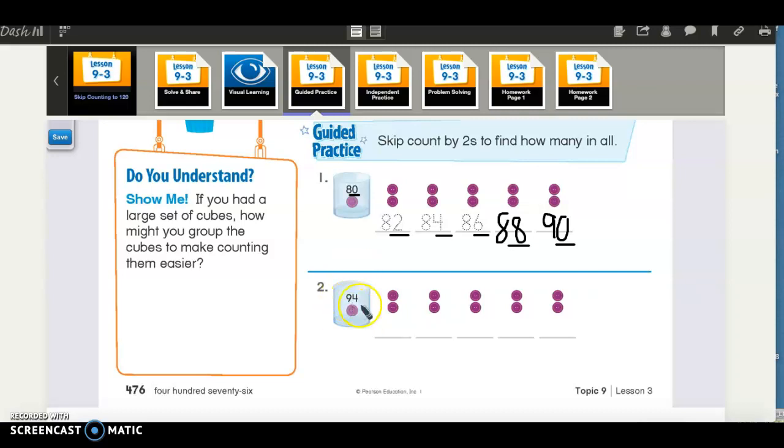So let's do it starting at the number 94. Ready? 94, 96, 98. Then what? 100, 102, 104. Good job. That is a little bit trickier, but look, it still follows that pattern. 4, 6, 8, 0, 2, 4.